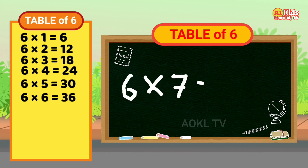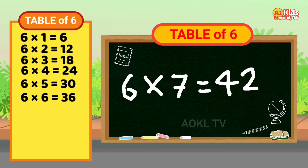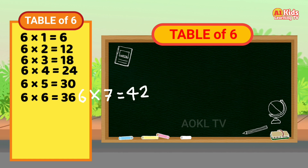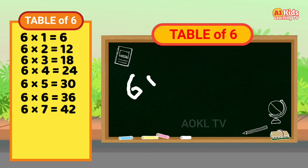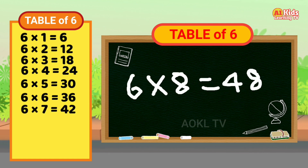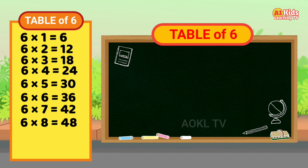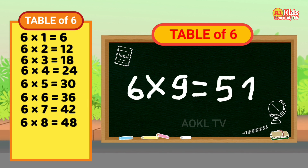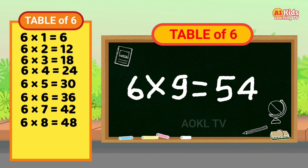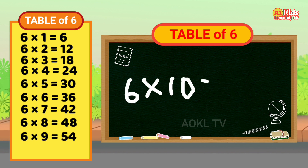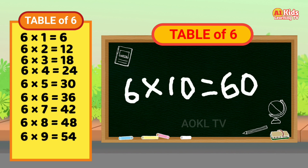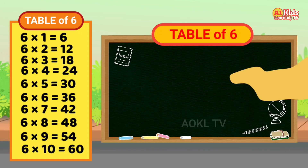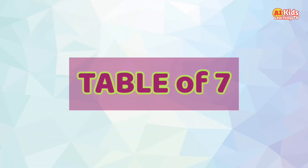Six seven's are forty-two. Six eight's are forty-eight. Six nine's are fifty-four. Six ten's are sixty.